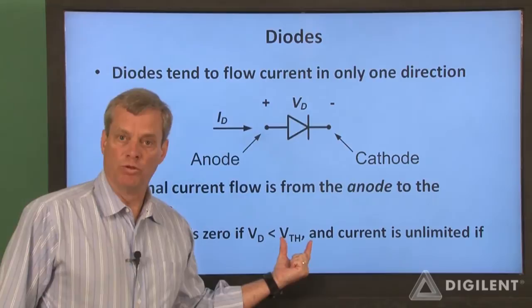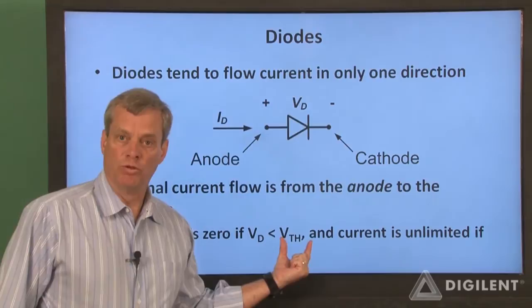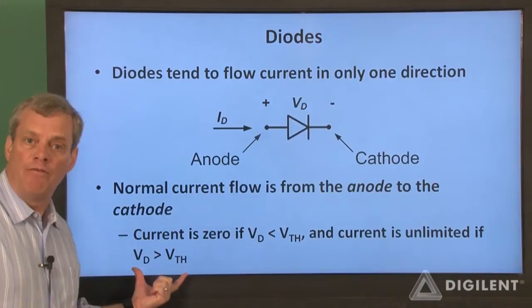For now, we'll think of diodes as allowing no current to flow if the diode voltage is below some threshold voltage V sub TH and allowing any amount of current to flow if the diode voltage is above the threshold voltage.